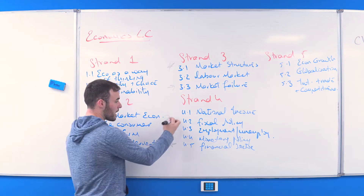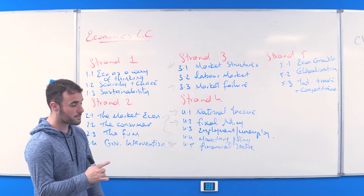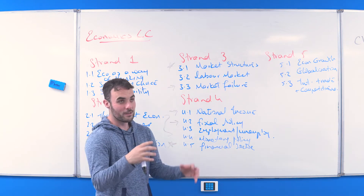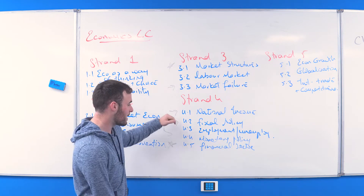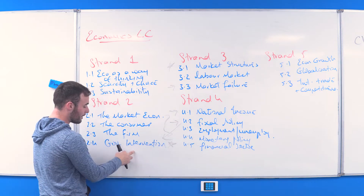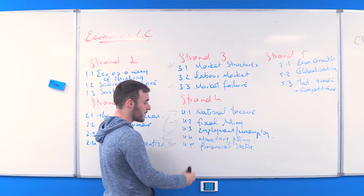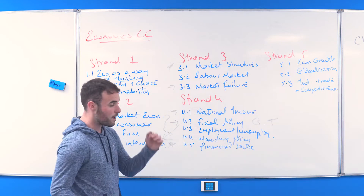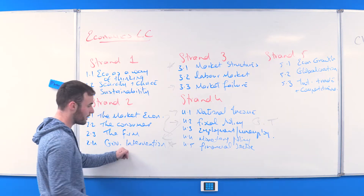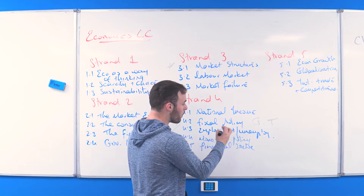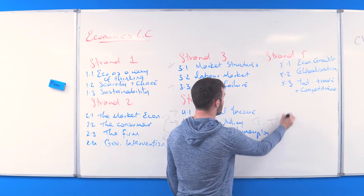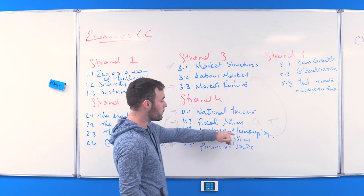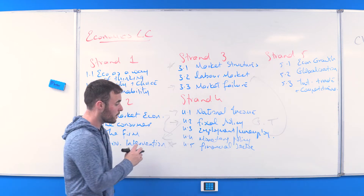Strand Four and Strand Five are your macro big chapters. National income and fiscal policy are massive questions — national income covers the trade cycle and circular flow of income. When studying fiscal policy, make sure you're linking it with government intervention; you can't really have one without the other. Fiscal policy covers government spending and taxation. Employment and unemployment wasn't heavily examined last year — when studying it, make sure you link it to your labour market, as they connect directly.